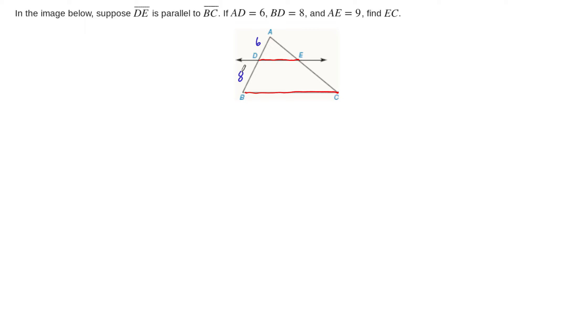BD has length 8 units, these are just lengths so they're not really obeying any order here. AE has 9 units. And so the question is, what is the measure of EC? What's the measure of this one?